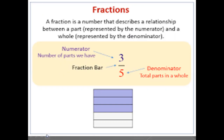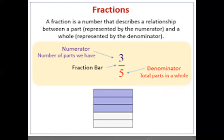A fraction is a number that describes a relationship between a part, represented by the numerator, and a whole number, represented by the denominator. Let me tell you what numerator and denominator are, because once you understand those, you'll understand fractions. Numerator means the total number of parts we have. Denominator is equal to the total parts in a whole.